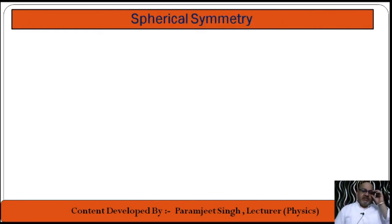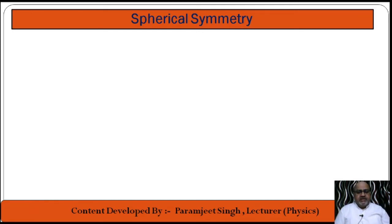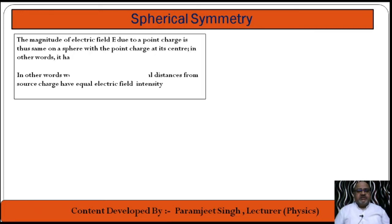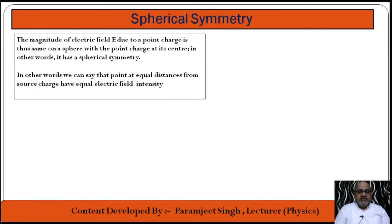Spherical symmetry means that points which are at equal distances from the source have equal electric field intensity. The direction of electric field is always radially toward or away from the source charge — radially inward for negative, radially outward for positive. This is what spherical symmetry means, and we will study it further in the context of electric potential.